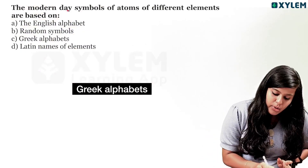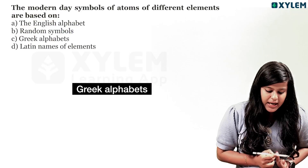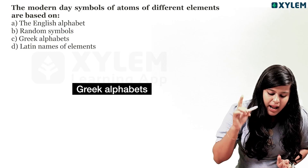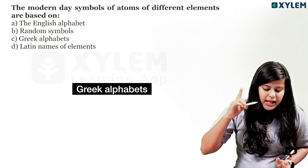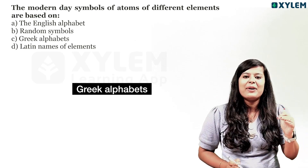The symbols of different elements are based on: the English alphabet, random symbols, Greek alphabet, or Latin names of the elements.